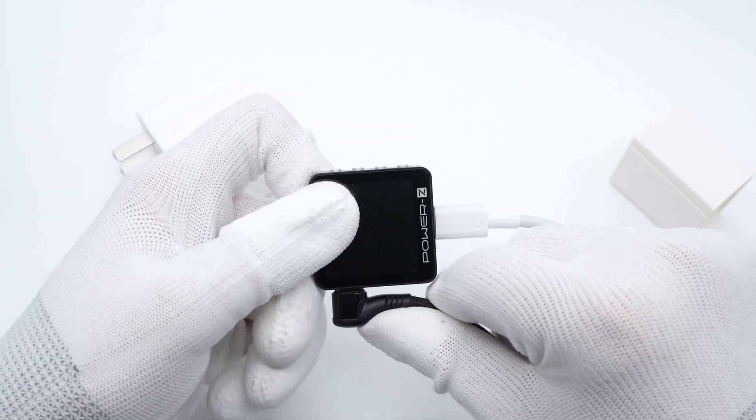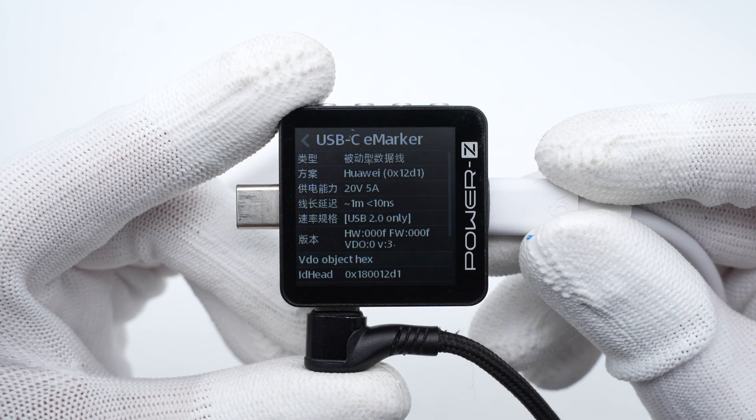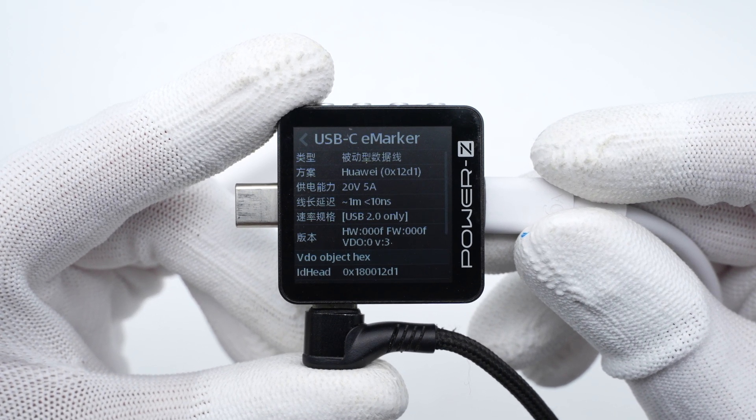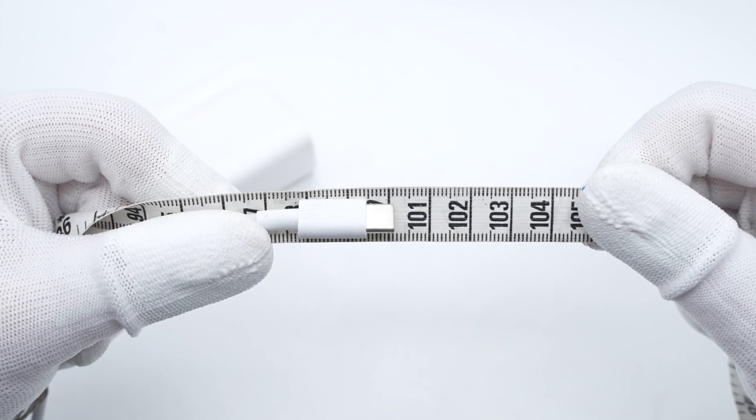The ChargerLab Power-Z KM003C shows this cable integrates an E-Marker chip, but it only supports USB 2.0. And the length of this cable is about 1 meter.